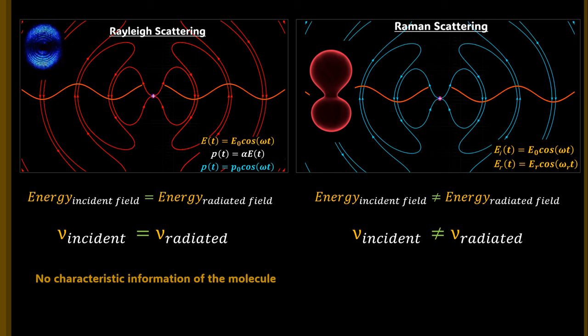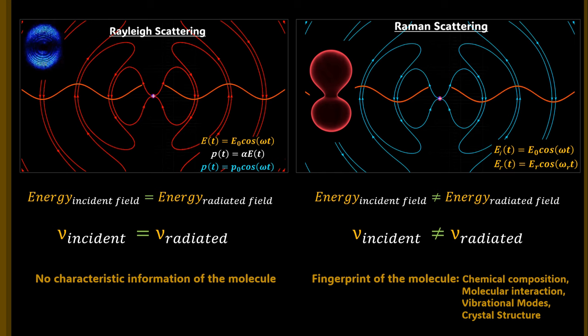The frequency of the re-radiated electric field is an intrinsic property of the molecule, because the polarization of the molecule actually decides the energy of the re-radiated field. Different molecular states, different molecules, different chemical bonding, and different compositions will each produce a different energy of the re-radiated electromagnetic field. Thus, this kind of scattering provides a fingerprint of the molecule, helping us identify different types of molecules as well as molecular interactions.